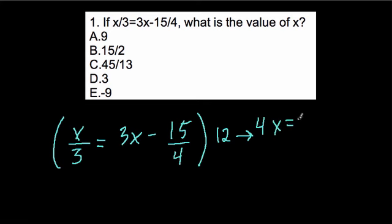And then 12 times 3x is 36x, right, minus what? Well, 12 times negative 15 fourths...